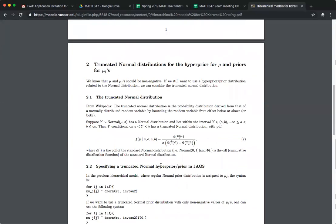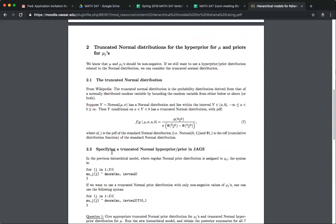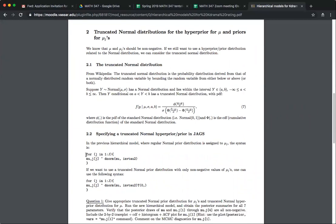So in equation seven, I give you the density of it. You can try to make an understanding of this and how to specify a truncated normal hyper prior or prior in JAGS. I gave you some sample code.